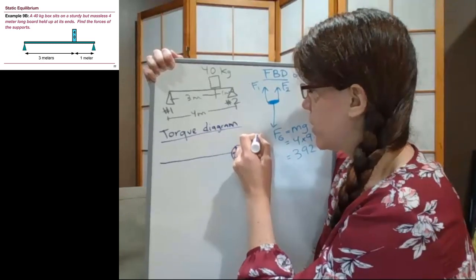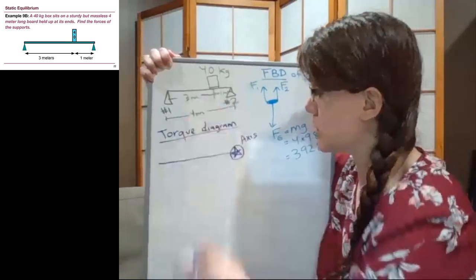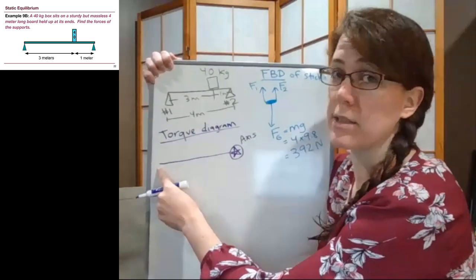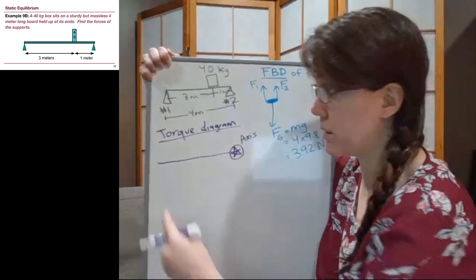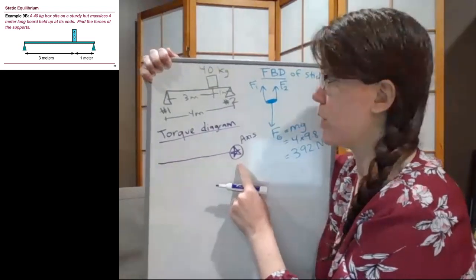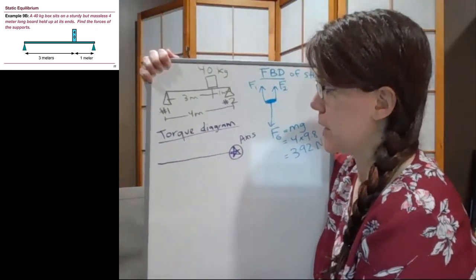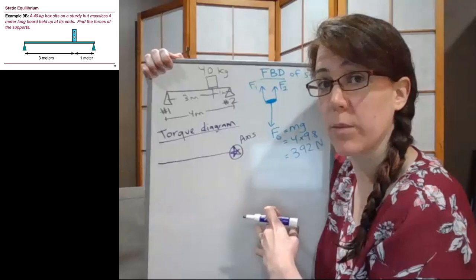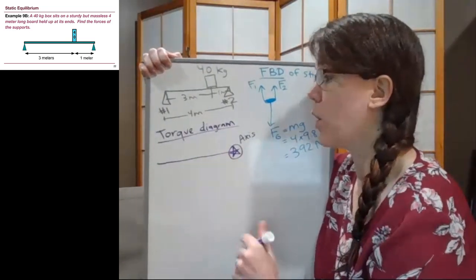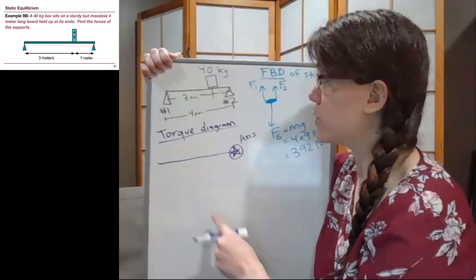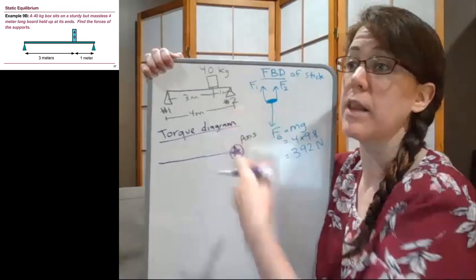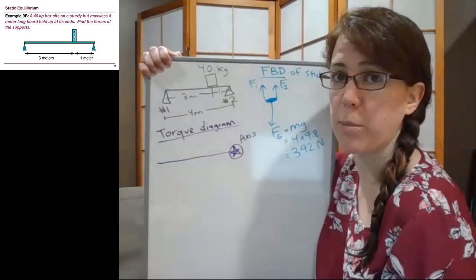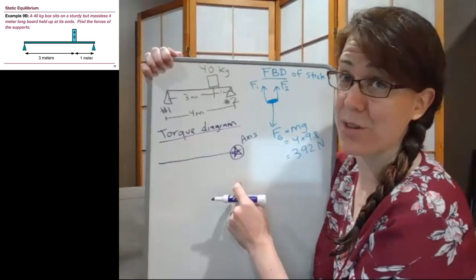Choosing the axis at the left or right end — where the supports are — makes our math significantly easier. I'm going to put the axis on the right side. I'd recommend that after seeing this problem, you restart it with the axis on the left side and verify you get the same values for F1 and F2. No matter where you put the axis, you get the same answer. The reason we put it at an unknown force is so the torque equation has only one unknown, avoiding a system of two equations.